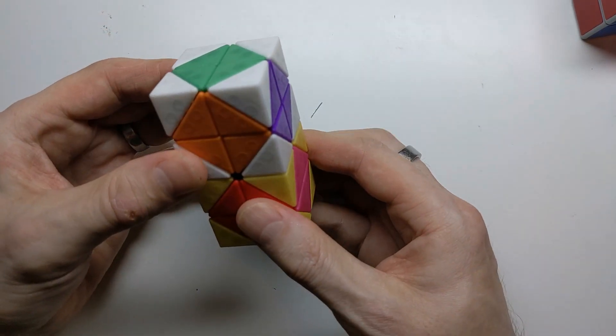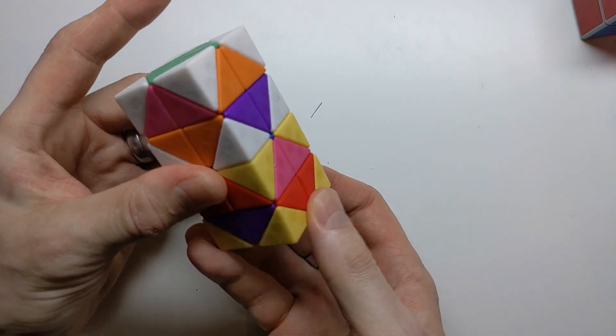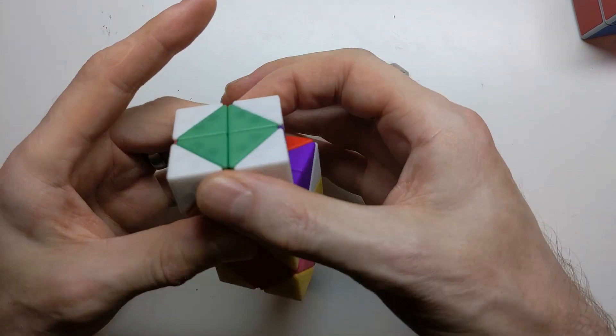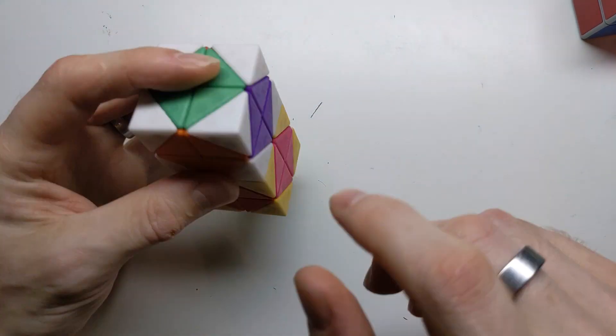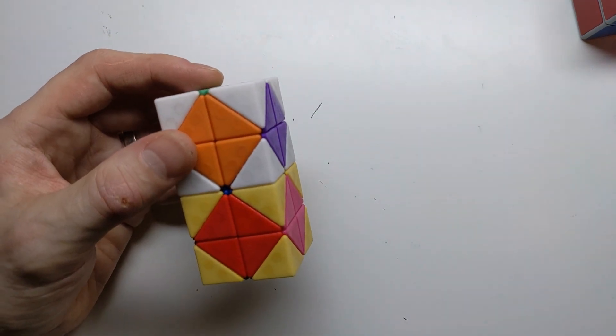Now notice what you can't do is this. This is not a legal move. If I want to move one of these end caps, I have to move the other end cap the same direction and the same number of turns. And the reason for that is that these green centers here are actually logically connected together on the four-dimensional hypercube.